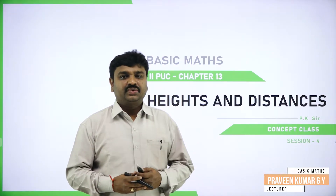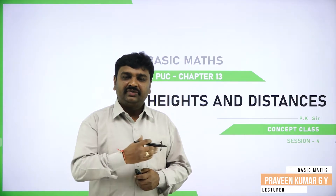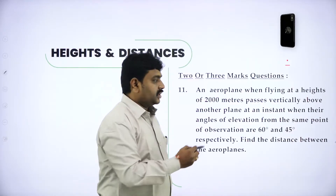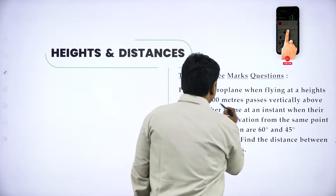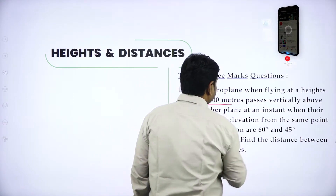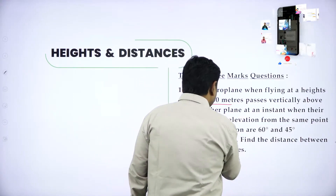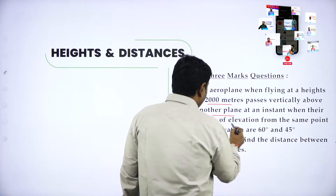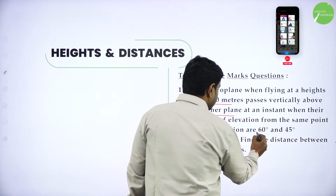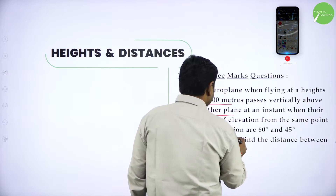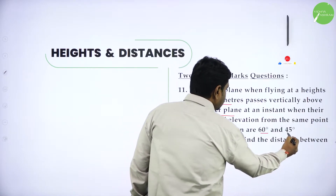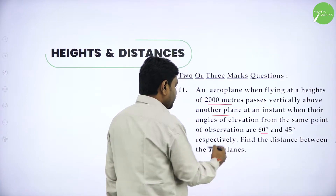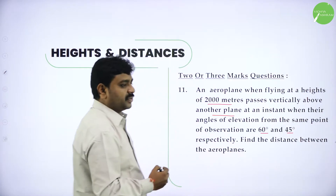Welcome to the session, dear students. Today we'll go ahead with the problems of heights and distance. When an aeroplane flying at a height of 2000 meters passes vertically above another plane, at an instant when their angles of elevation from the same point of observation are 60 degrees and 45 degrees respectively, find the distance between the planes.